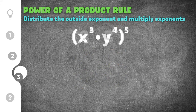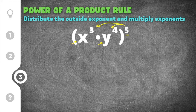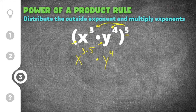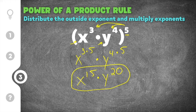Our last practice problem gives us x to the 3rd times y to the 4th, in quantity raised to the exponent of 5. Just because our bases are variables does not mean we change the rule — the rule stays the same. We're going to take the exponent of 5 and distribute it to everything inside of the parentheses. So x to the 3rd is being multiplied times 5, and y to the 4th is also being multiplied times 5. Simplifying: x to the 3 times 5 is x to the 15th, and y to the 4 times 5 is y to the 20th. Our solution is x to the 15th times y to the 20th. Since x and y are different bases, you cannot combine this any further.